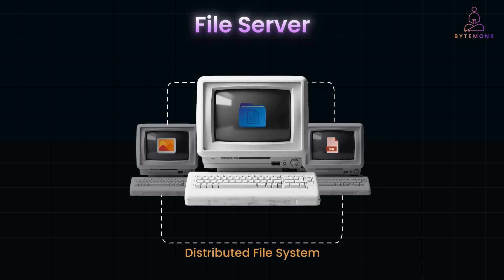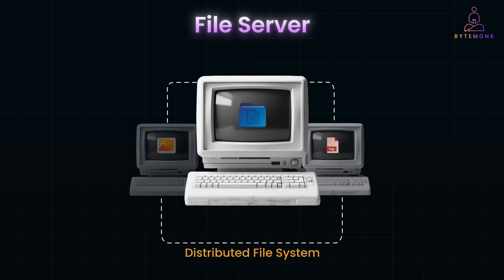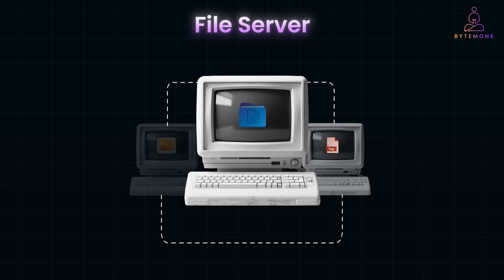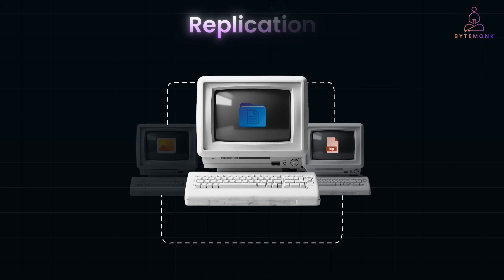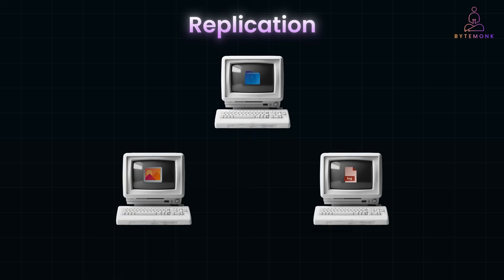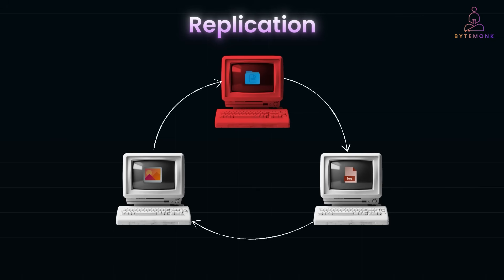But there is a problem: what happens if server two goes offline? All the images and videos stored there become inaccessible. That's where replication comes in. Instead of storing files on just one server, we make copies and store them on multiple servers, ensuring that if one server fails, we can still retrieve the files from another.